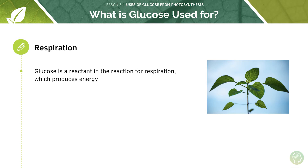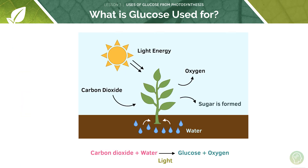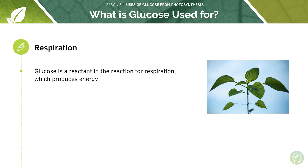So what is glucose used for? Glucose is a reactant in the reaction for respiration, and remember respiration produces energy in the form of ATP. Notice the difference here: in photosynthesis glucose is a product, so it's on the right-hand side of the equation, but in respiration glucose is a reactant, so it would be on the left-hand side of the equation. It's being used in order to produce the products of respiration, which include energy in the form of ATP.